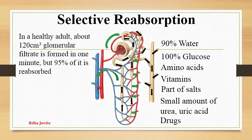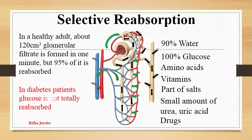In a healthy adult, in 1 minute, 120 cm³ of glomerular filtrate is formed but 95% of it is reabsorbed. In diabetes patients, glucose is not totally reabsorbed, so a small portion of glucose will be present in the urine.